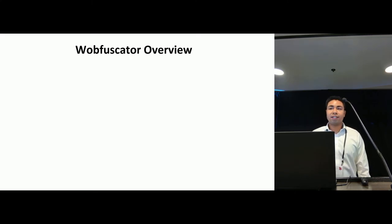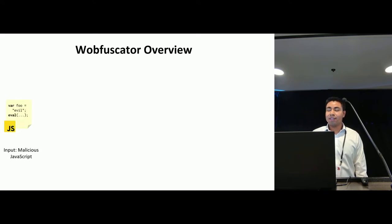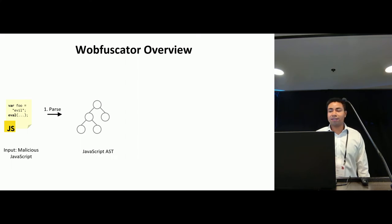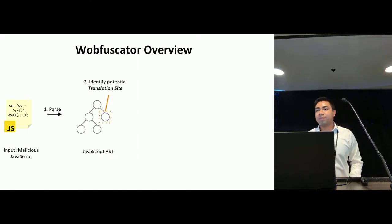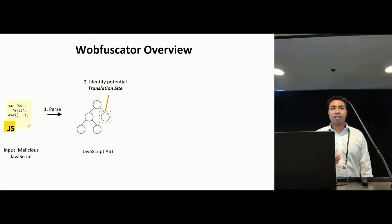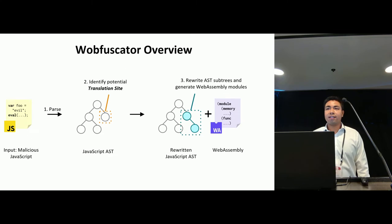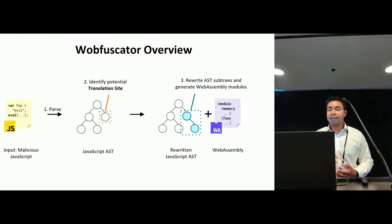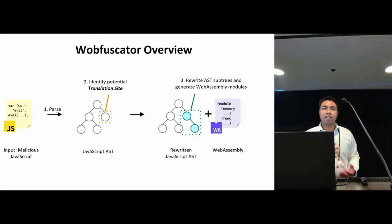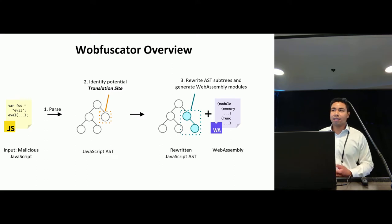To understand how WafiSkater works, I'll present a high-level overview. Given a malicious JavaScript file, first the file is parsed into an abstract syntax tree. Second, this AST is traversed to find potential translation sites where our transformations can be applied. Finally, the identified sites are rewritten to WebAssembly and the AST is rewritten to use this new translated code. The output is the rewritten JavaScript file and the WebAssembly modules.